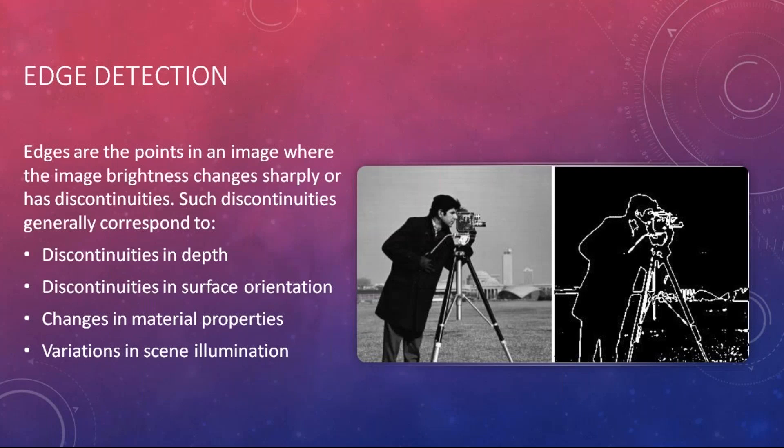The next OpenCV function is edge detection. Edge detection identifies what edges are important for recognizing objects in an image. The algorithm looks at discontinuities in depth, discontinuities in surface orientation, changes in material properties, and variations in scene illumination. For example, a man's dark coat against a bright sky creates high pixel variation at the boundary, and the edges around the man are calculated from that variation.